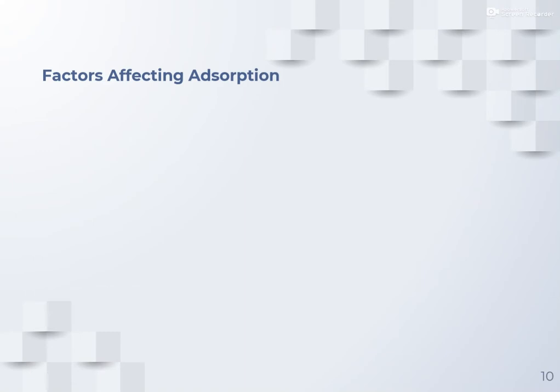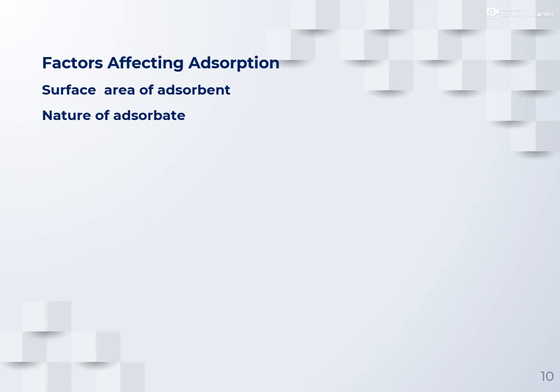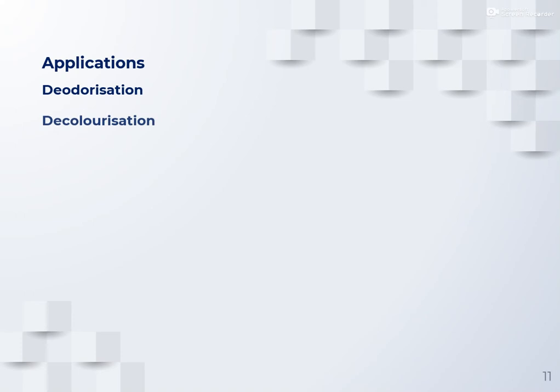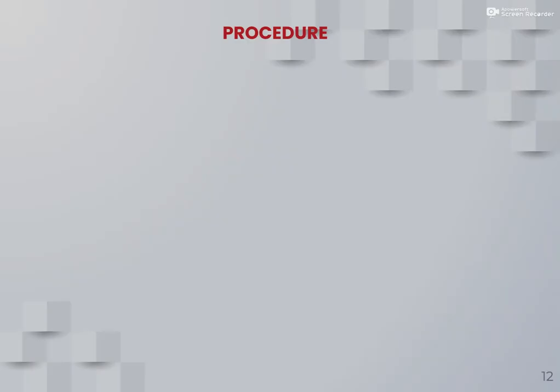Factors affecting adsorption include: surface area of the adsorbent (more surface area leads to more adsorption), nature of the adsorbent, heat of adsorption, temperature, pressure, thickness of the adsorbent layer, and pH of the medium. Applications of adsorption include deodorization, decolorization, catalytic reactions, treatment of food poisoning, and chromatography.